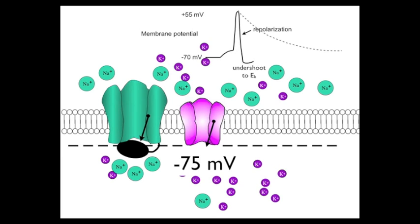The dashed line in the membrane potential record shows what the repolarization would be if the membrane did not have the voltage-gated potassium channels — the membrane would take a much longer period of time to repolarize. That is the whole point of the voltage-gated potassium channels: they act to repolarize the membrane quickly, and thereby sharply limit the duration of the action potential.